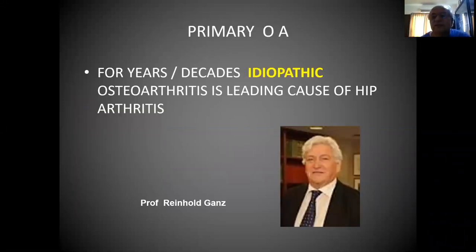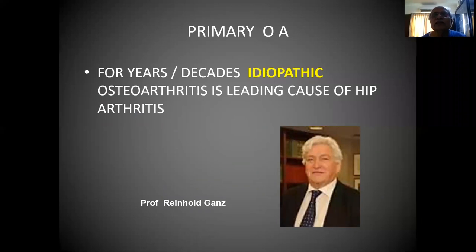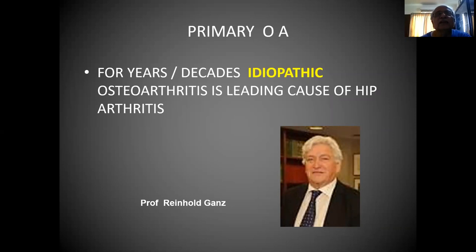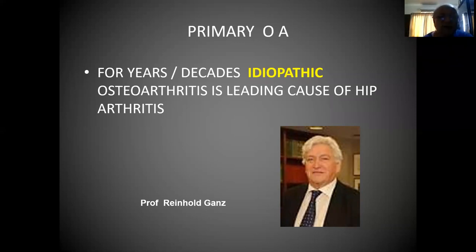And this is Prof. Renald Gans. For years and decades, idiopathic osteoarthritis was considered the leading cause of hip arthritis, but he clearly put it in his academic work that this is not like that — this arthritis is secondary due to FAI. He proved this entity.